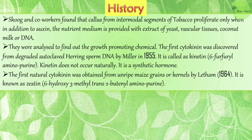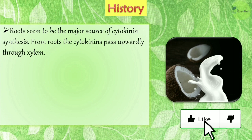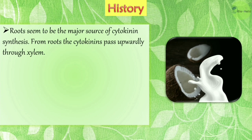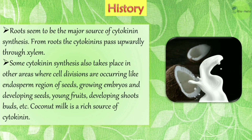The first natural cytokinin was obtained from unripe maize grains or kernels by Letham in 1964. It is known as zeatin, that is 6-hydroxy-3-methyl-trans-2-butenyl aminopurine. Roots seem to be the major source of cytokinin synthesis; from roots the cytokinins pass upward through the xylem. Some cytokinin synthesis also takes place in other areas where cell divisions occur, like the endosperm region of seeds, growing embryos, developing seeds, young fruits, developing shoots, and buds. Coconut milk is a rich source of cytokinin.